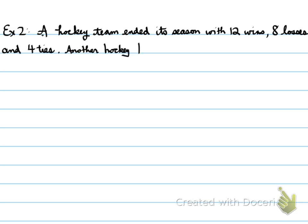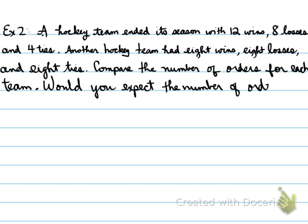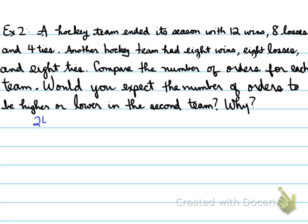A hockey team ended its season with 12 wins, 8 losses, and 4 ties. Another hockey team had 8 wins, 8 losses, and 8 ties. Compare the number of orders for each team. Would you expect the number of orders to be higher or lower in the second team? So let's look at this and try and figure this out. Well, in the first one, we know there's 12 wins, 8 losses, 4 ties.